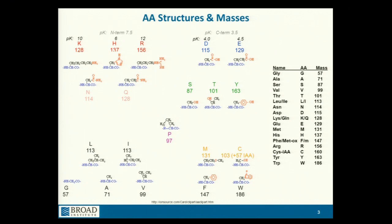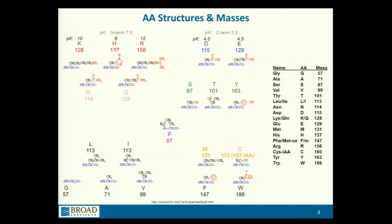Meanwhile, aspartic acid and glutamic acid have acidic side chains, but we do almost all protein and peptide mass spectrometry at low pH, so they will not be negatively charged. These three amino acids — serine, threonine, and tyrosine — are particularly important from a biology standpoint because they can become phosphorylated. We're going to talk a lot about phosphorylation today and tomorrow.